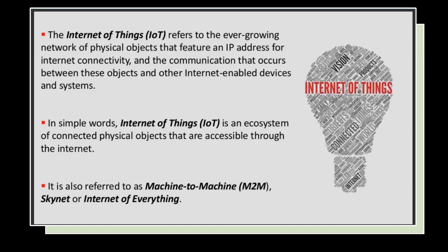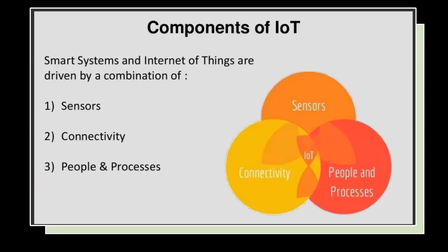It is also called the Internet of Everything. Components of IoT — smart systems and the Internet of Things — are driven by a combination of sensors, connectivity, people, and processes. Here we can see these are all interconnected with each other, and the common point for all of this is IoT.